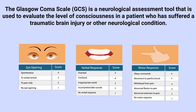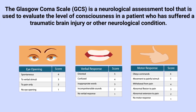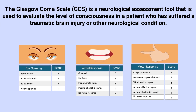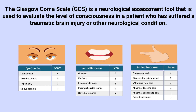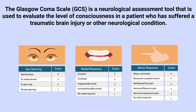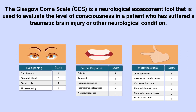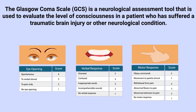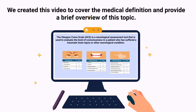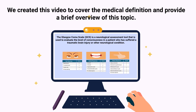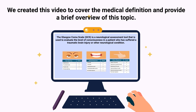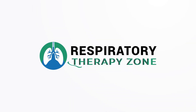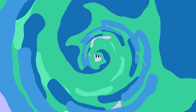The Glasgow Coma Scale is a neurological assessment tool that is used to evaluate the level of consciousness in a patient who has suffered a traumatic brain injury or other neurological condition. We created this video to cover the medical definition and provide a brief overview of this topic.